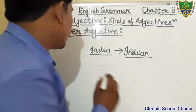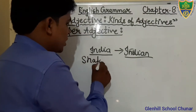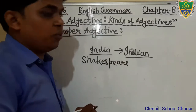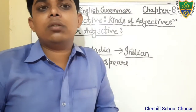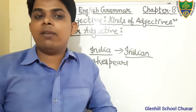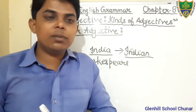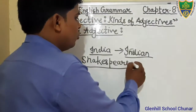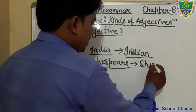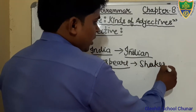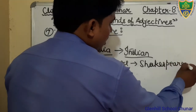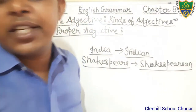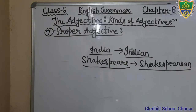In the same way, Shakespeare is the name of a famous writer — a very famous dramatist in English literature. Shakespeare is a Proper Noun. But when we write 'Shakespearean,' that is a Proper Adjective.